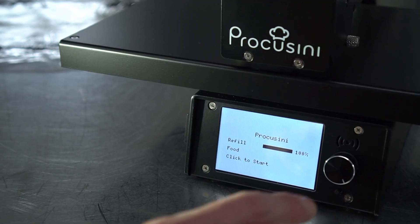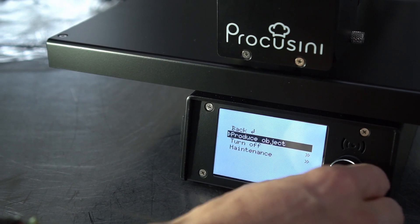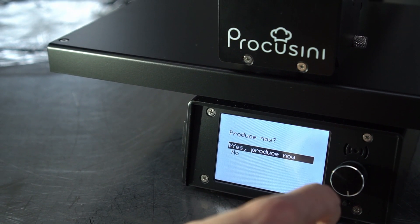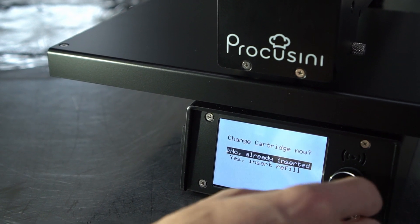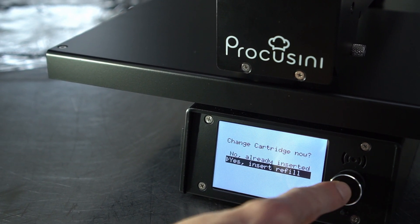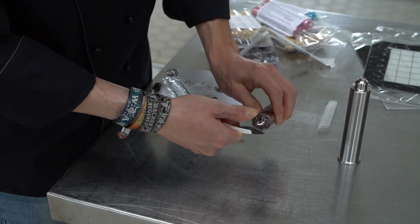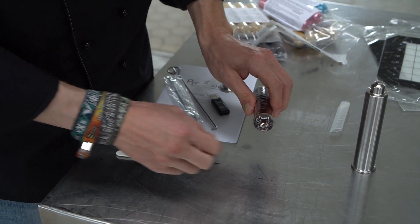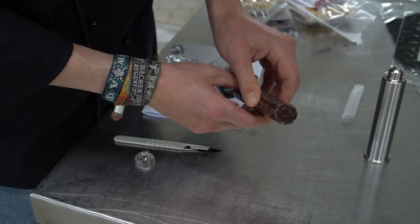And this is how you prepare for printing. When working with chocolate, please note that the room temperature should be around 20 to 23 degrees Celsius.